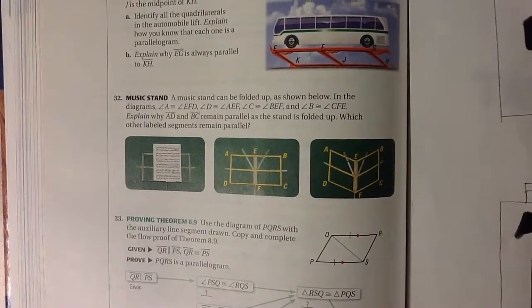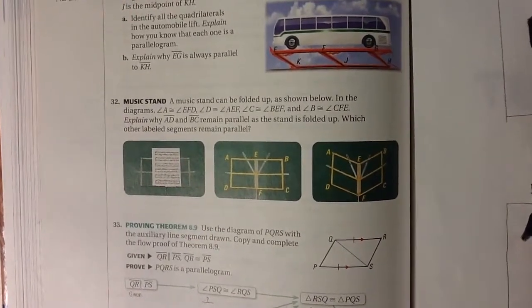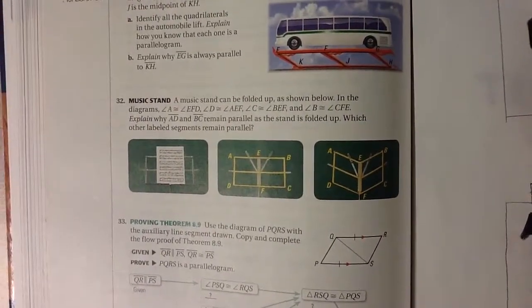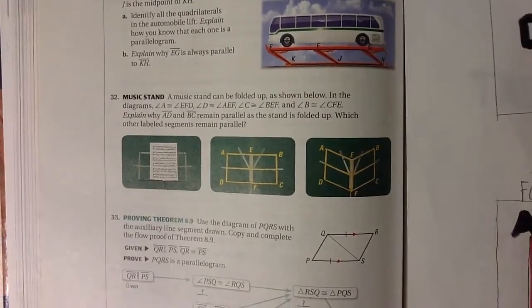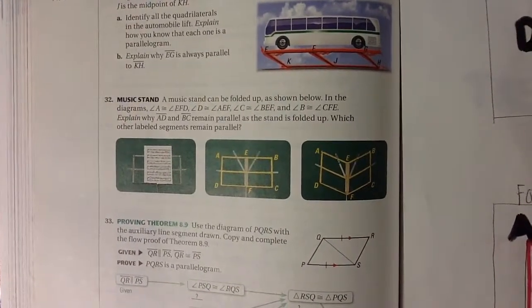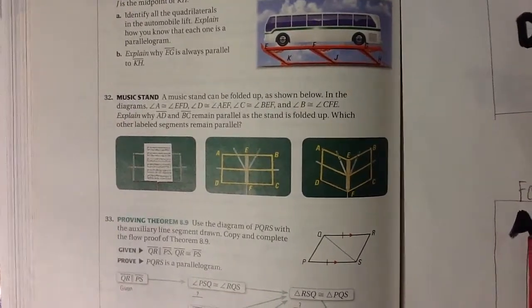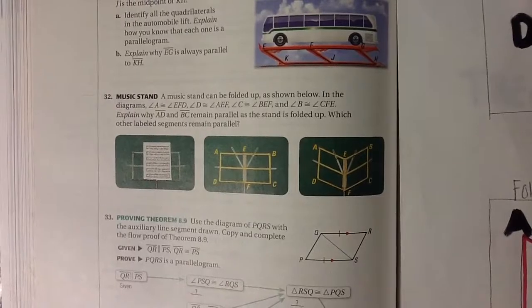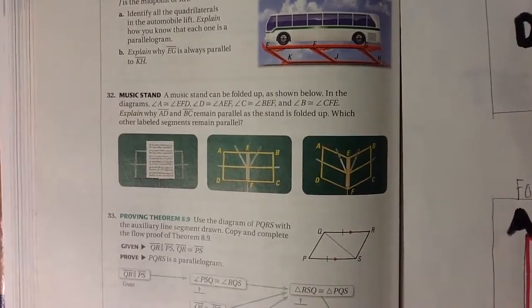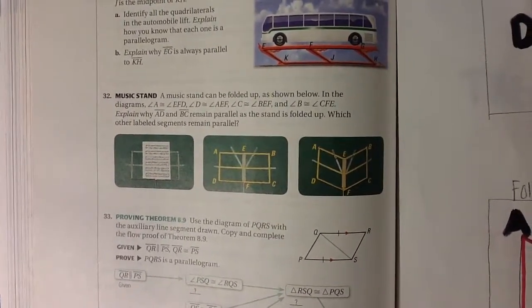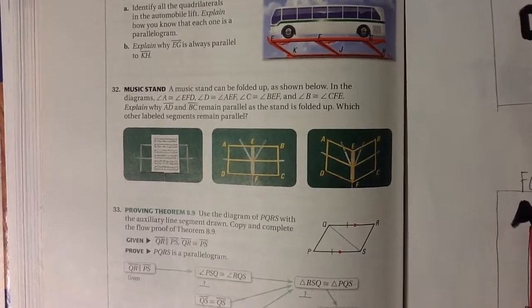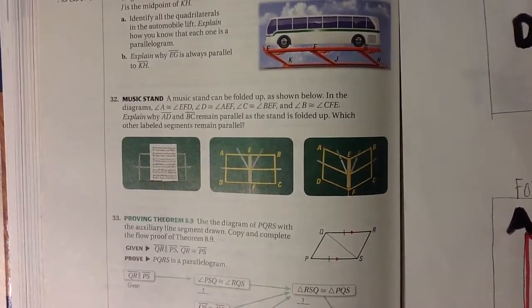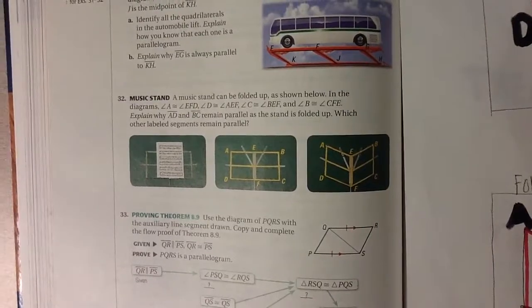Question 32 says a music stand can be folded up as shown below. In the diagrams, angle A is congruent to angle EFD, angle D is congruent to angle AEF, angle C is congruent to angle BEF, and angle B is congruent to angle CFE. Explain why line segment AD and line segment BC remain parallel as the stand is folded up, and which other labeled segments remain parallel.